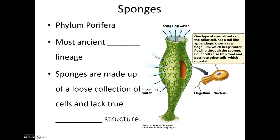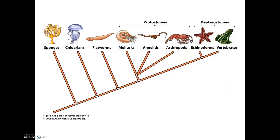The first phylum that we will discuss is phylum Porifera. This is the most ancient animal lineage. It includes the simplest of all animals. Sponges are made up of a loose collection of cells, and they lack true tissue structure. Tissues are groups of similar cells combined together to have a specific function or purpose. Sponges have a few different types of cells, but they're just randomly distributed throughout the body. The development of true tissues is what separates the sponges from the rest of the animals.